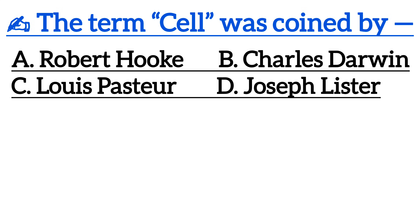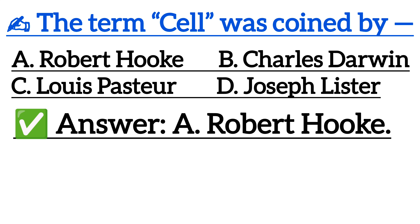Next one is: The term 'cell' was coined by — Option A: Robert Hooke, Option B: Charles Darwin, Option C: Louis Pasteur, Option D: Joseph Lister. Correct answer is Option A: Robert Hooke.